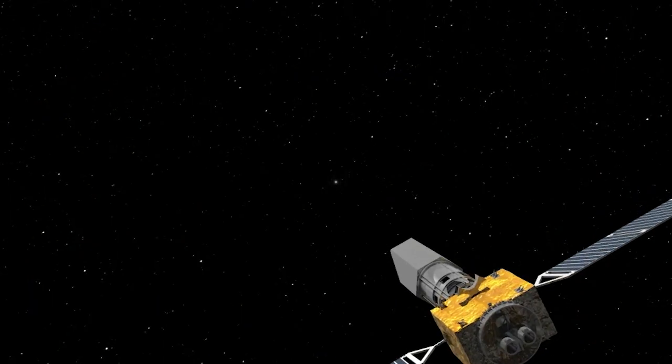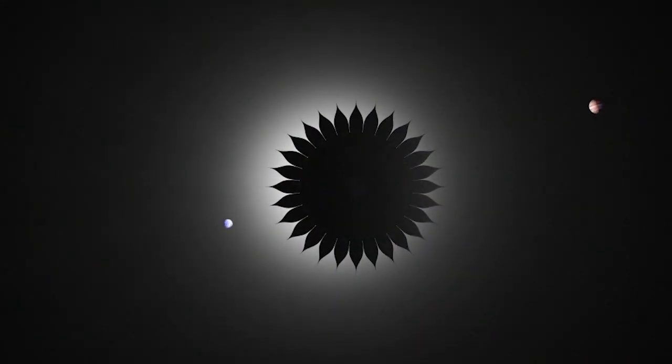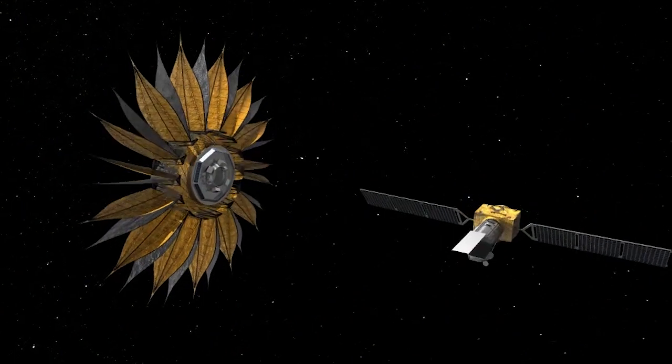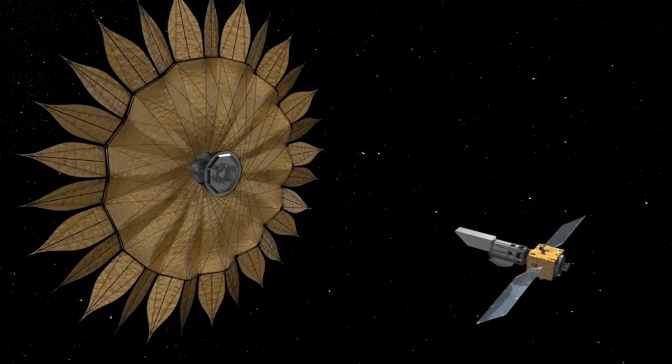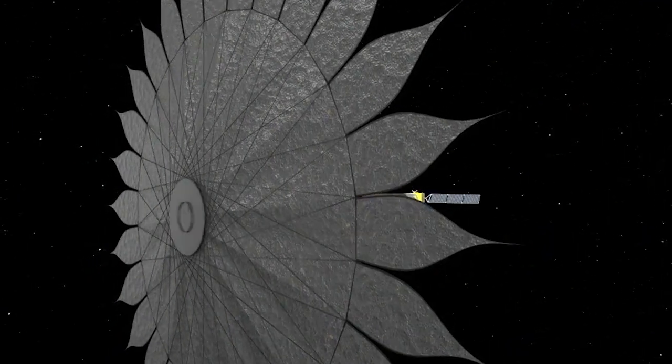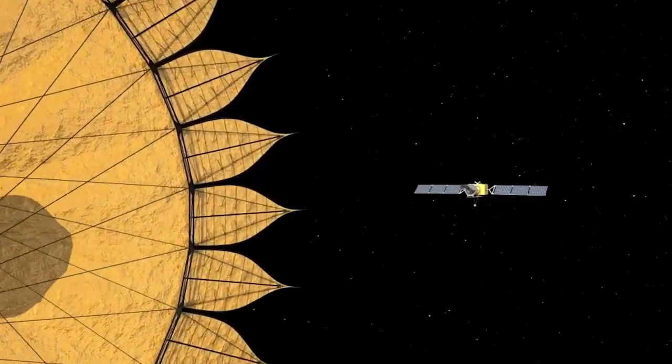The other is called a star shade. The idea is to put a screen out in space and block the light of the star before it gets to the telescope. A star shade is a disk about 34 to 40 meters in diameter that flies roughly 50,000 kilometers in front of the telescope. The idea of flying it that far away is that it has to look so small that you can see the planet just adjacent to the star.